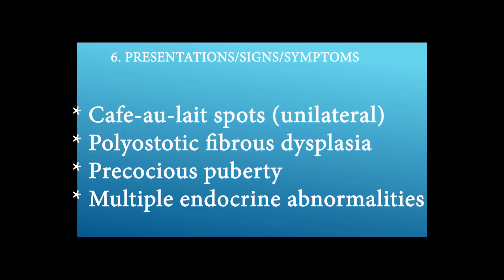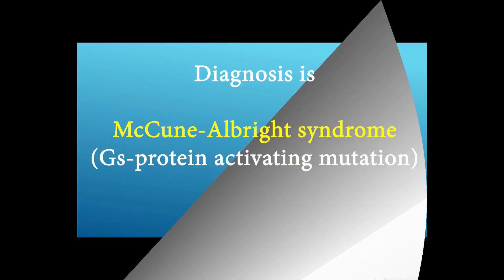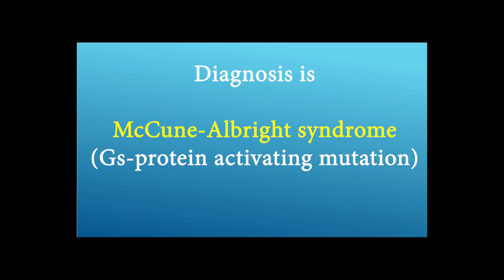Presentations: café-au-lait spots (unilateral), polyostotic fibrous dysplasia, precocious puberty, and multiple endocrine abnormalities. The diagnosis is McCune-Albright syndrome — a Gs protein activating mutation.